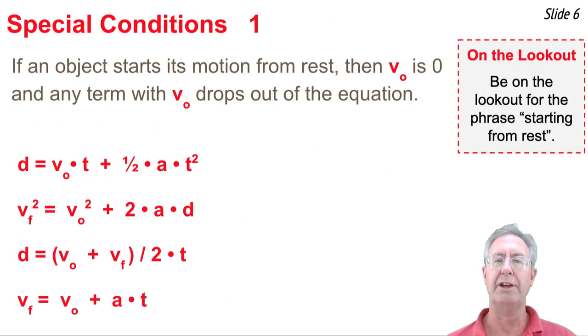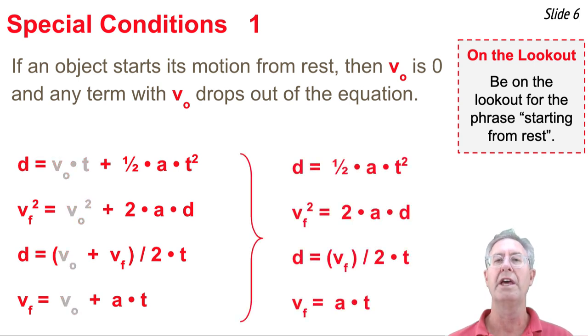Another thing that you should be aware of as you use these kinematic equations or see others, such as your friends or enemies or your teachers using these equations, is that on occasion there are special conditions that alter the form of these equations. For instance, somebody might be solving a problem in which originally the object starts from rest. In such a case, the v_o terms that you see in these equations end up dropping out of the equations, so they might be rewritten as shown here. So always be on the lookout for a phrase in the problem that you're trying to solve that says starting from rest or beginning in a resting position because in those situations, under those conditions, the kinematic equations may simplify to the form that you see here.